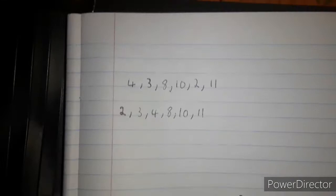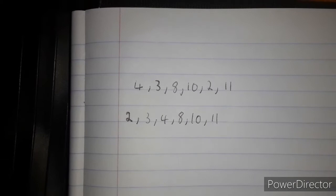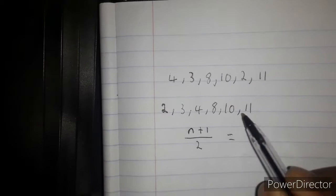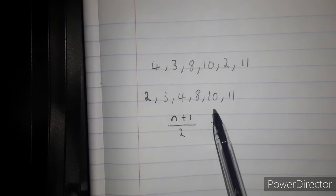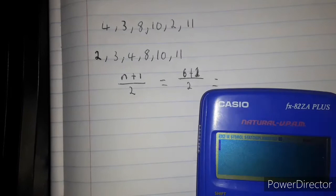The second step is to find the median position. How do we find the median position? We're going to use this formula: n plus 1 divided by 2. n equals how many observations do we have? 1, 2, 3, 4, 5, 6. So 6 plus 1 divided by 2 equals 7 divided by 2 equals 3.5.